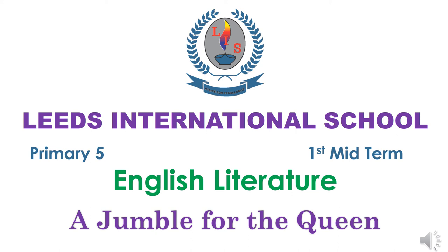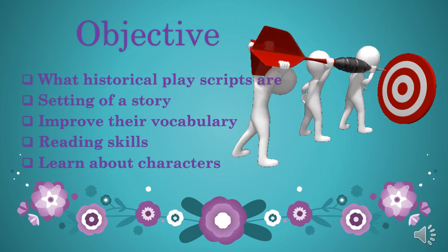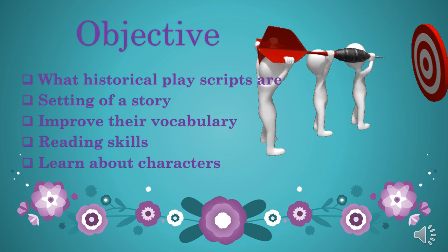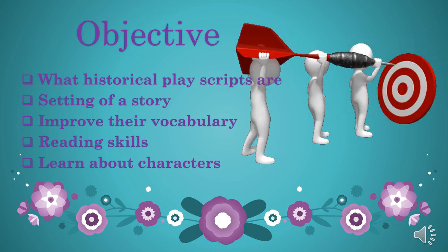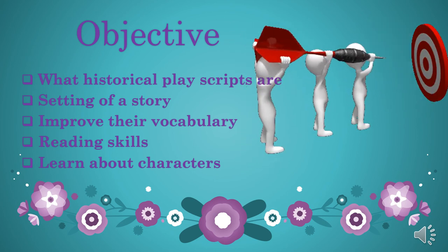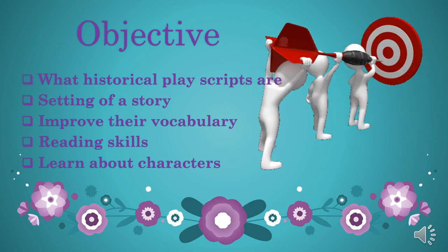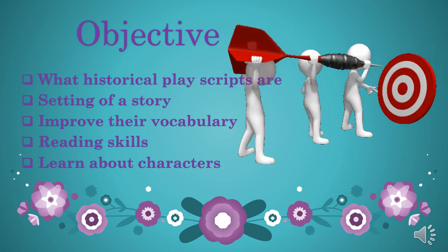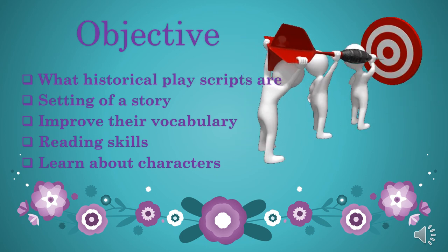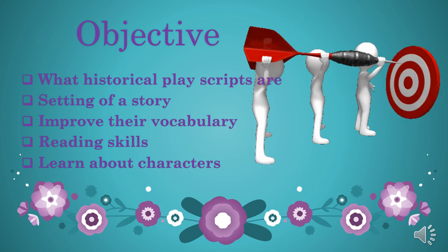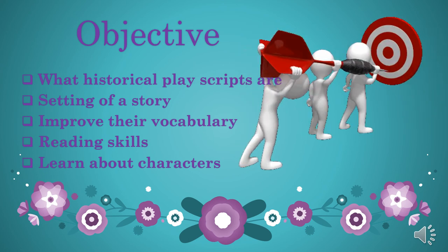Hello children, welcome to Leeds International School. Primary 5 first midterm English Literature: 'A Jumble for the Queen' by Julia Donaldson. By the end of this lesson, students will be able to learn what historical play scripts are, the setting of a story, improve their vocabulary and reading skills, and learn about characters.